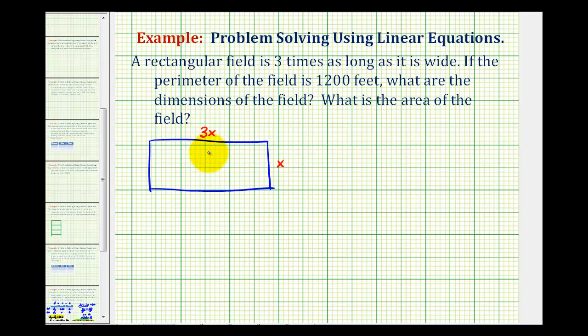We know the opposite sides of rectangles are equal in length, so this would have a length of x feet and this would have a length of 3x feet. So the perimeter or the distance around this field would be equal to 1,200 feet.